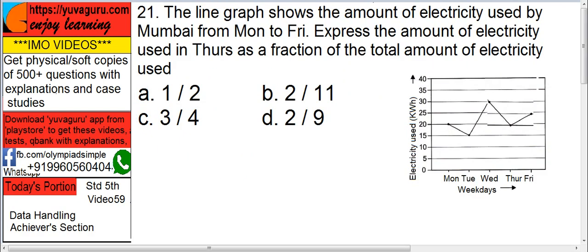Now let's solve achiever's section problem 21. The line graph shows the amount of electricity used by Mumbai from Monday to Friday. Express the amount of electricity used on Thursday as a fraction of the total amount of electricity used.